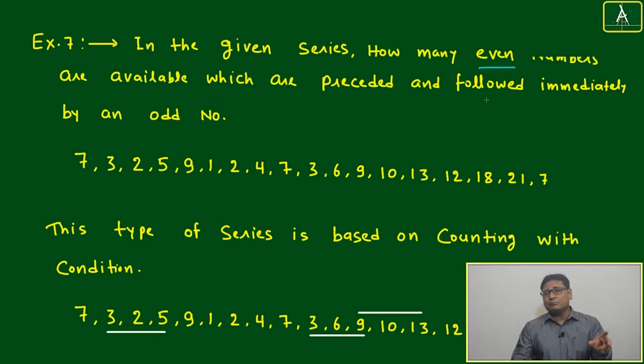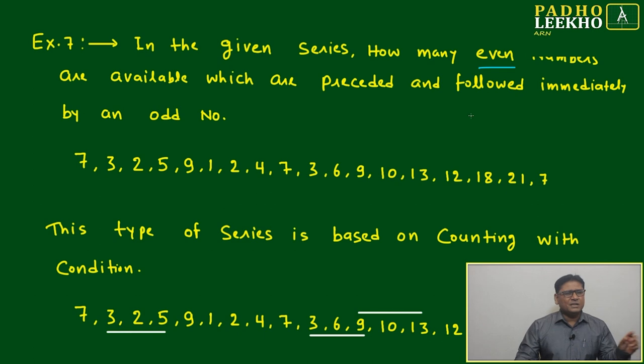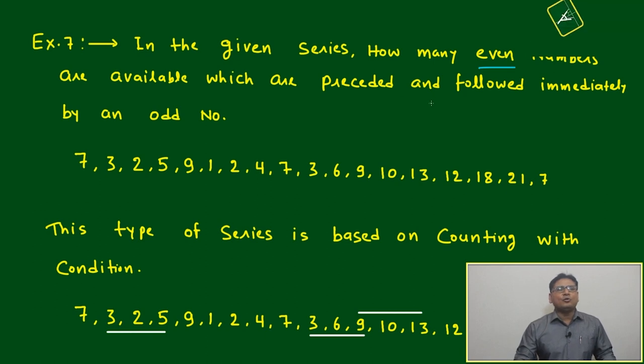They can play based on even number, natural number, or prime number. It's not multiple things - even number, odd number, natural number, prime number - these four they can use. How many even numbers are available which are preceded and followed immediately by an odd number?